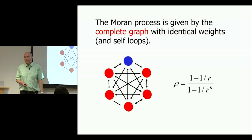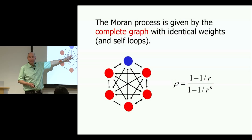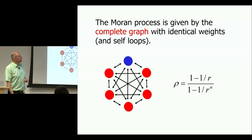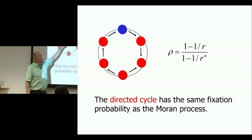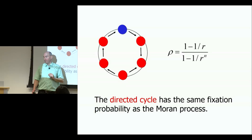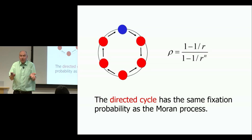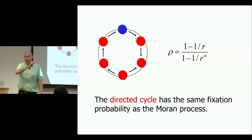We call the complete graph the well-mixed population. As a simple example, on the directed cycle, the fixation probability of a randomly placed mutant can be easily calculated and we get the same formula as the Moran process. So changing the population structure very much here didn't change the fixation probability. Time until fixation could have changed, but the probability of fixation has not. On the undirected cycle — where you can go backward and forward — again nothing changes in the fixation probability.